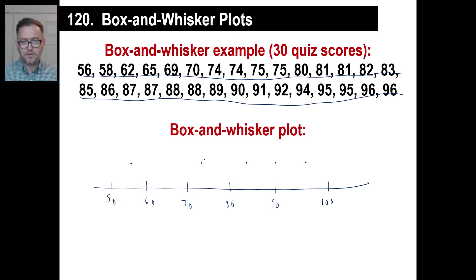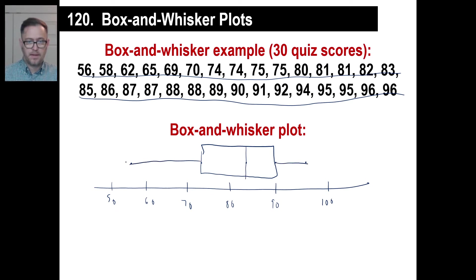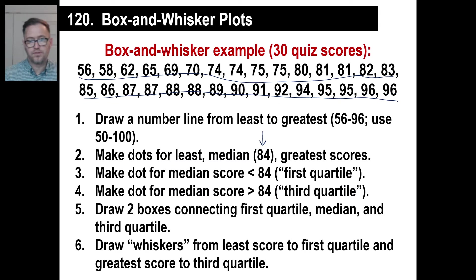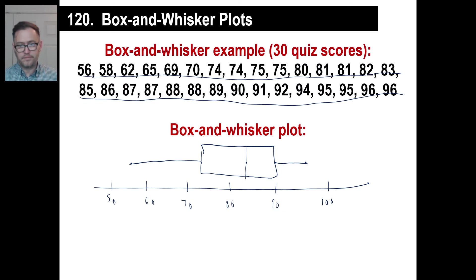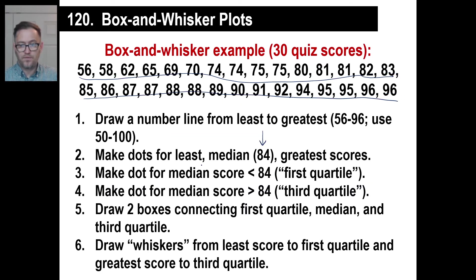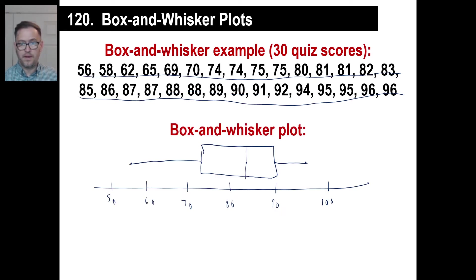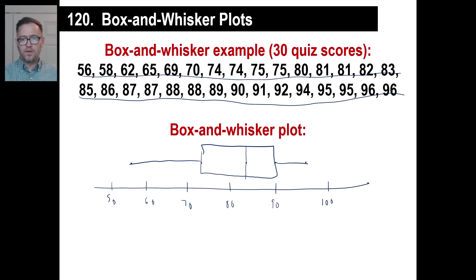So now we're going to make basically two boxes — it looks like this. And this is an awful drawing; your book's boxes look way better. Then we'll make a little whisker. We're drawing two boxes connecting the first quartile, the median, and the third quartile like that. Then we'll draw whiskers from the least to the first quartile, and from the greatest score to the third quartile. And that's our box and whisker plot. That kind of tells you approximately about a fourth of information is in those chunks.